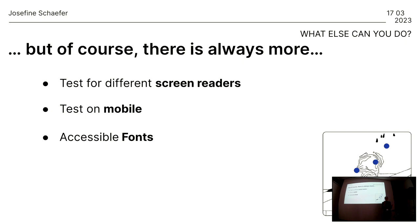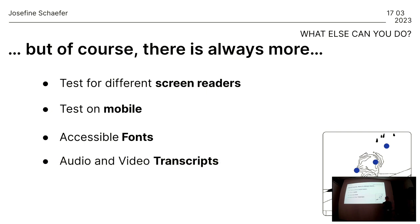There are fonts specific to neurodivergent folks that help people with reading disabilities. It's really interesting what helps our brains distinguish between different letters. You can also look into audio and video transcripts, or even add sign language versions of your content, depending on your audience and their requirements. And thinking about language accessibility — not only enabling translation, but offering an option for simple language is also a big factor.